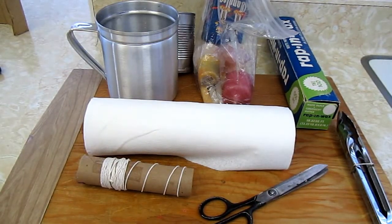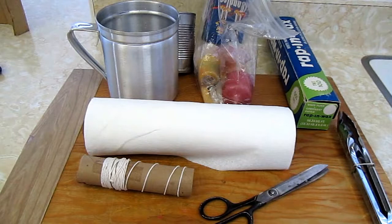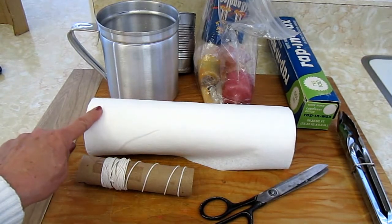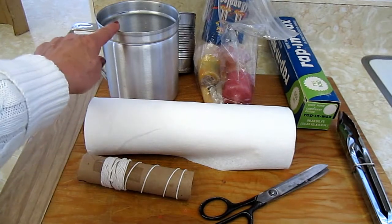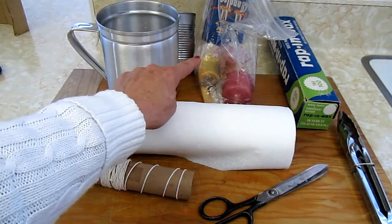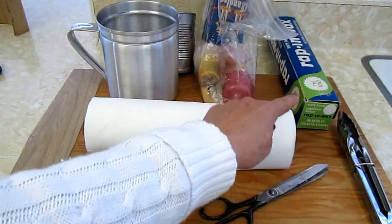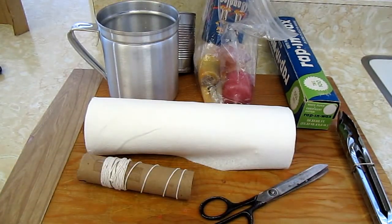Hi, it's AlaskaGranny. I'm going to show you how to make some fire starters out of paper towels. What you need is string, paper towels, a melting pot, old candles, wax paper to protect your surface, some tongs, and some scissors.